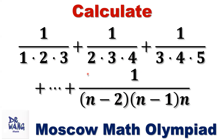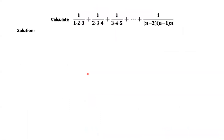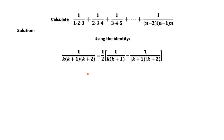How do we find a general formula for this special sum? Here is the detail. We are going to use the following identity. Check the left-hand side: the denominator is a product of three consecutive numbers, k, k plus 1, k plus 2. The right-hand side is one half times the difference of two terms.